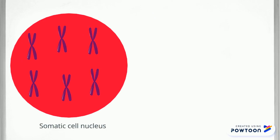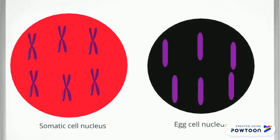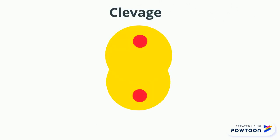The nucleus of an egg cell only contains half of the DNA because it has to be fertilized by a sperm cell, which contains the other half of the DNA needed to sustain life. It takes three hours to start seeing if the transfer was successful. To see if the transfer was successful, you must see cleavage, which means the cell is starting to split into another cell.